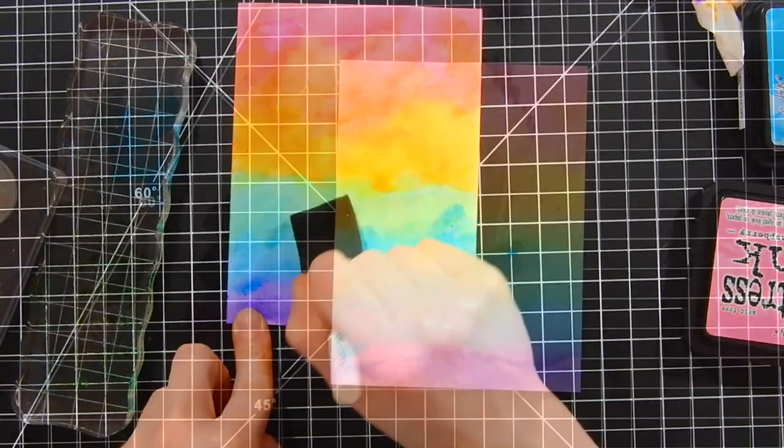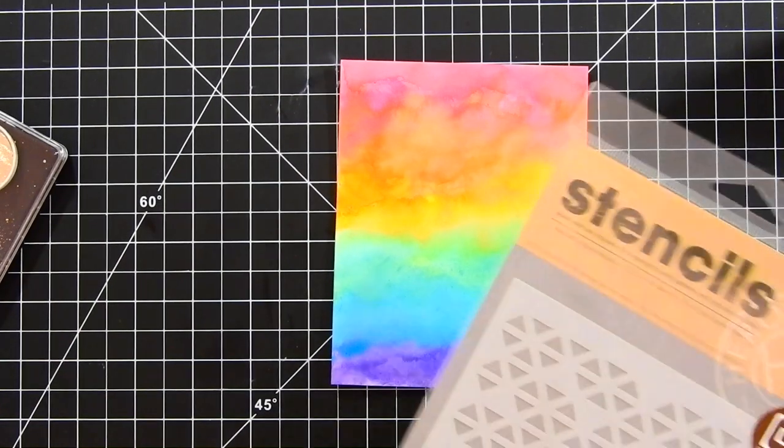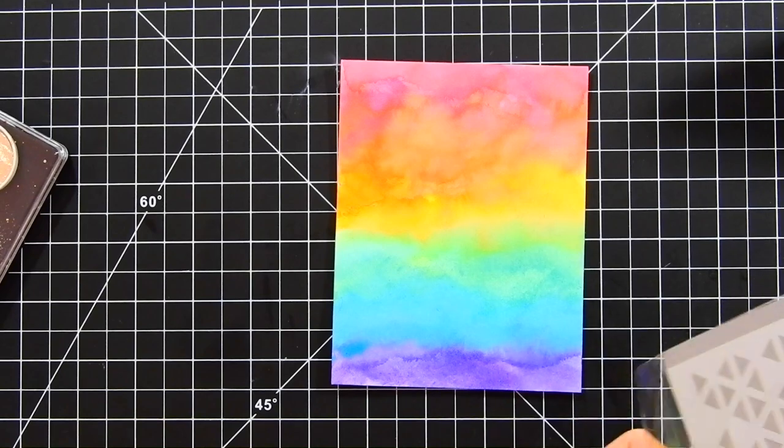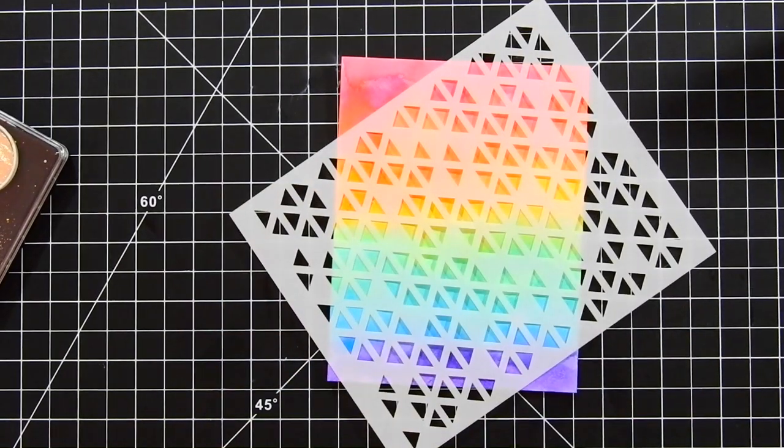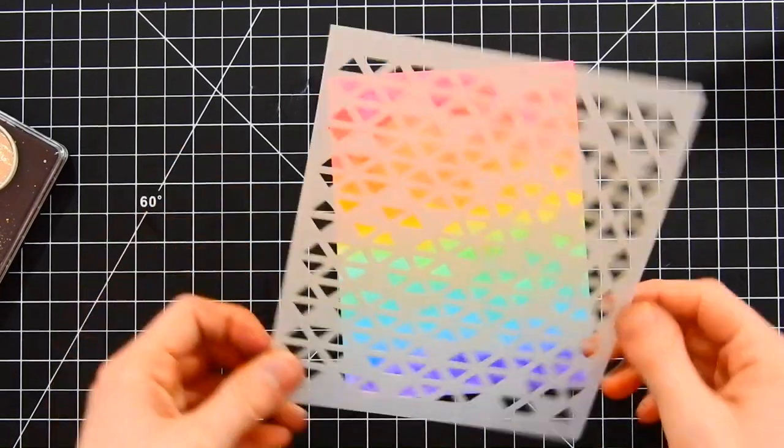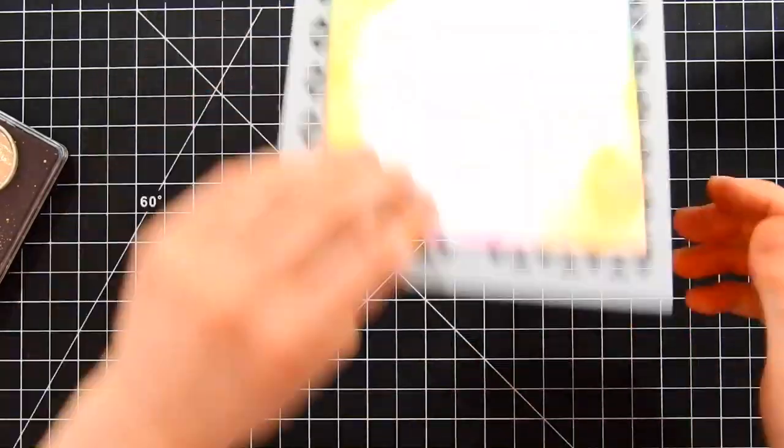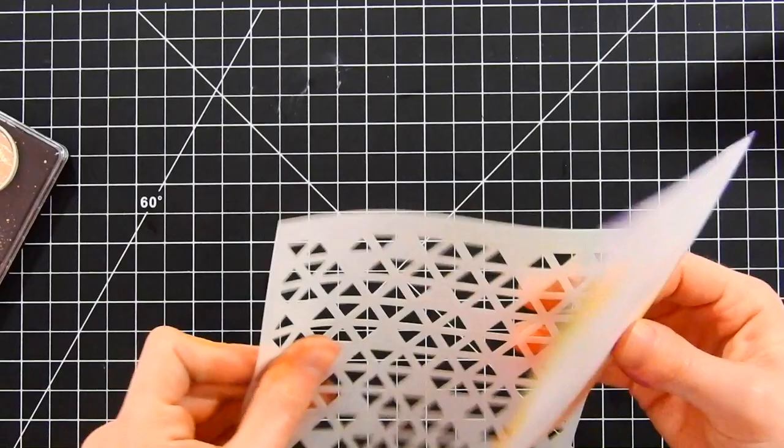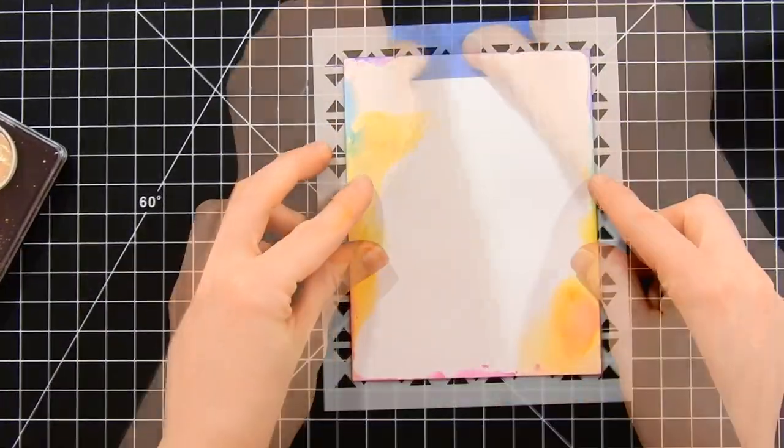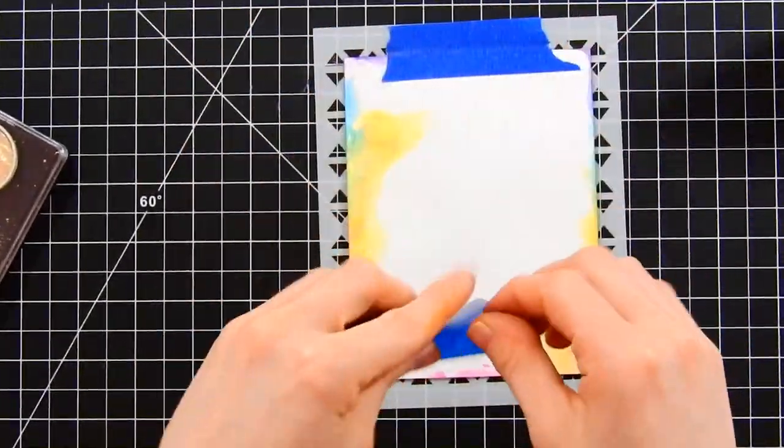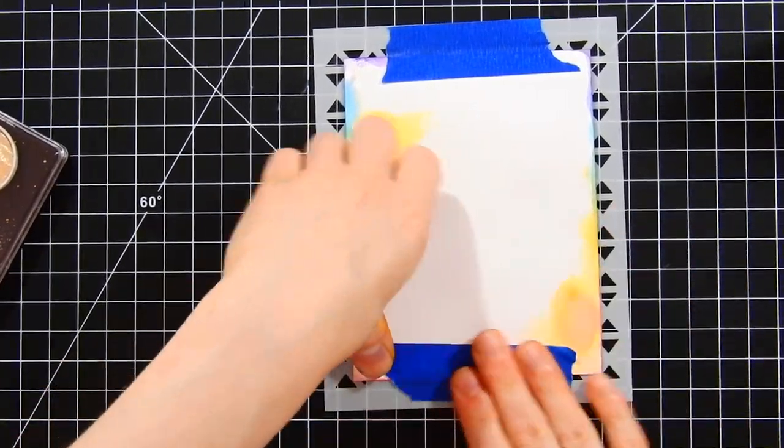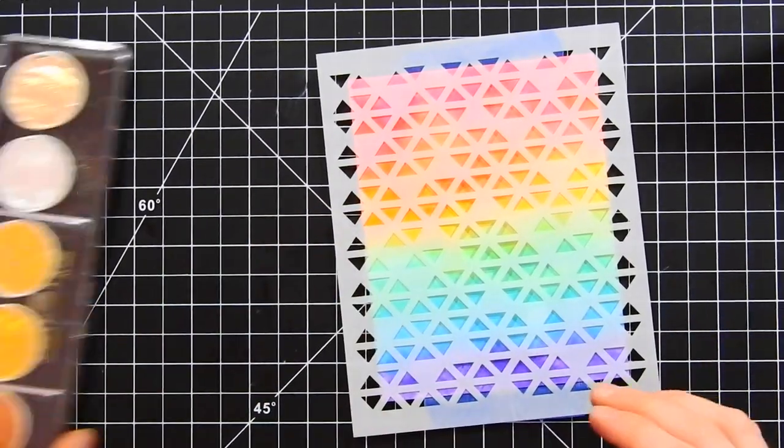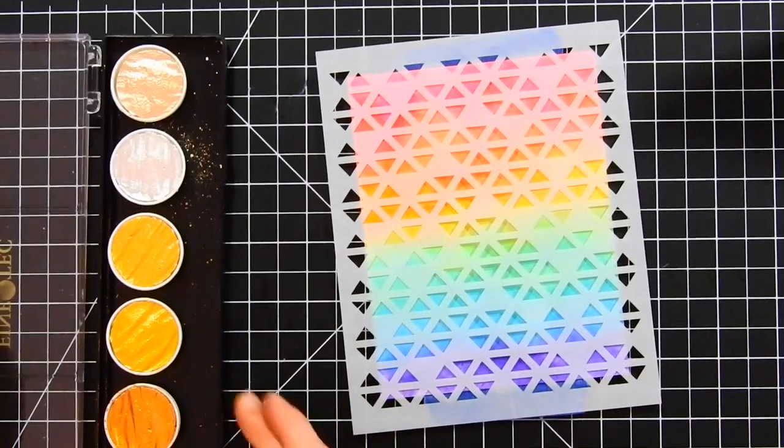Now that we've got our background all finished, I'm going to take a stencil. This is a triangle geometric stencil from Hero Arts. I'm lining up the stencil on the back side. You can tell the back side from the front because the back side is a little bit more rough along the areas where it's been cut, rather than on the front where it's a little bit more smooth. It does help to know which side is which because as you're blending the color on with your ink blending tool, it will blend a little bit easier on the front side.